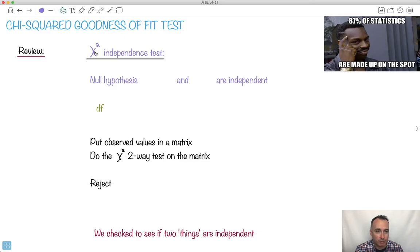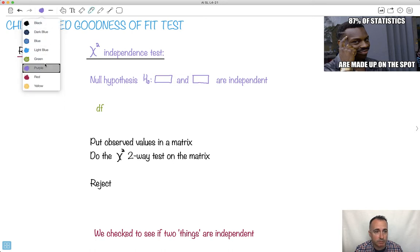First, I want to do a revision of chi-squared independence testing. It can all fit right here, just to remind you, because we're going to use some of these things. So the null hypothesis, if we were checking for chi-squared independence, we made a null hypothesis H0, and we would state that blah blah blah, whatever that thing is, and blah blah blah are independent.